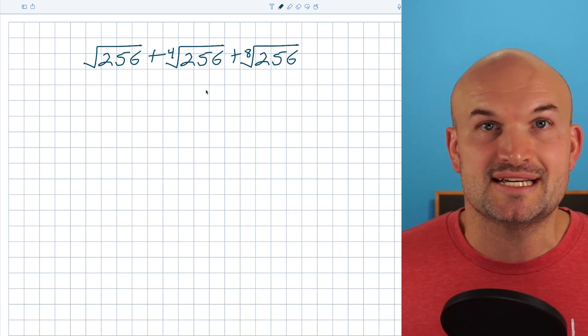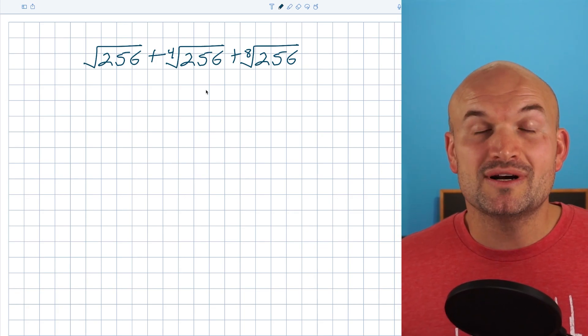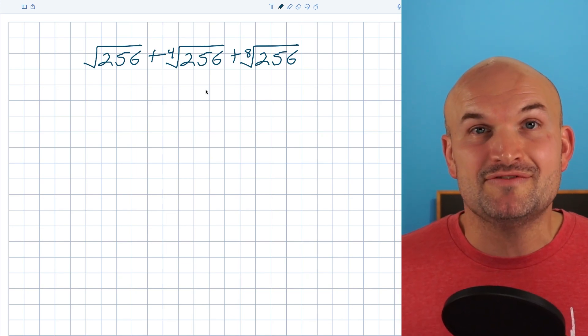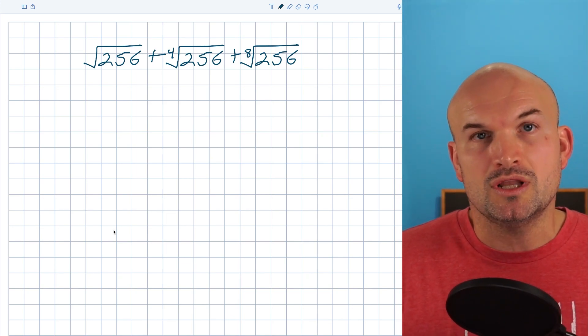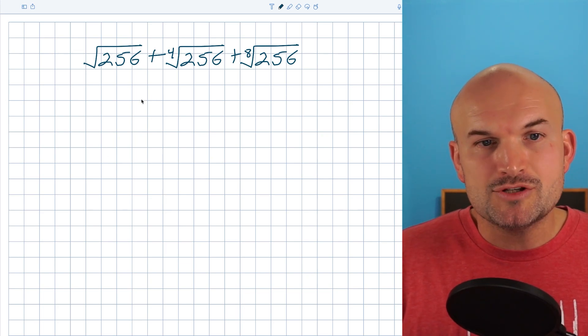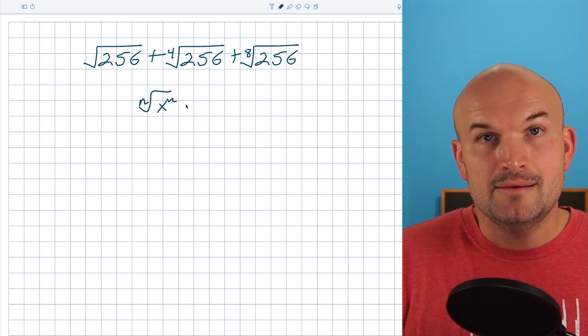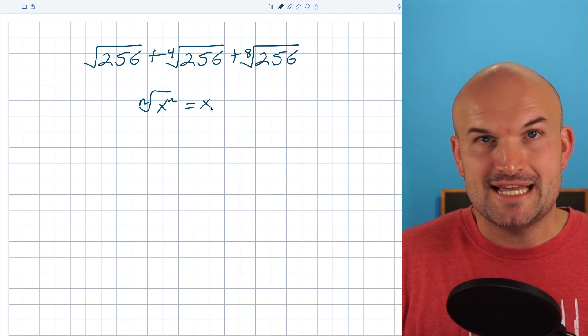So I recognize that 256 is an even number. So therefore, it could be divisible by two, or it could be divisible by two raised to different powers. Now, remember our golden rule of simplifying radicals. What we want to obtain is the nth root of x to the n, because that is going to simplify just to x.